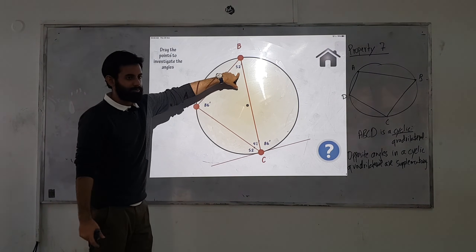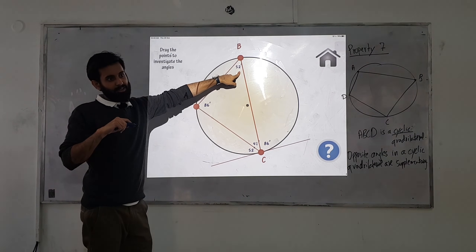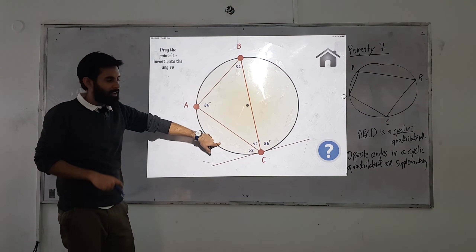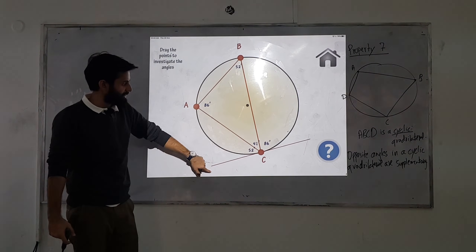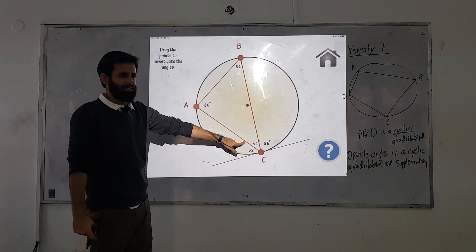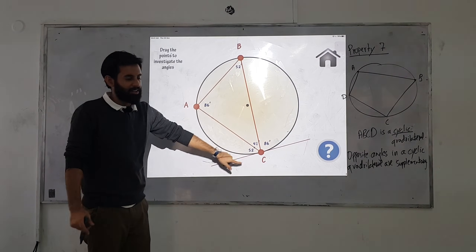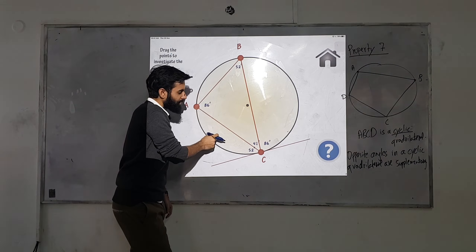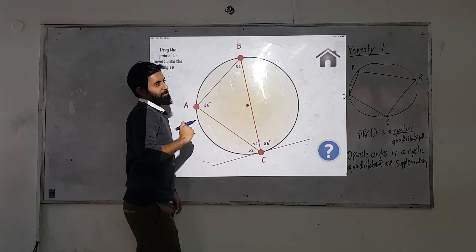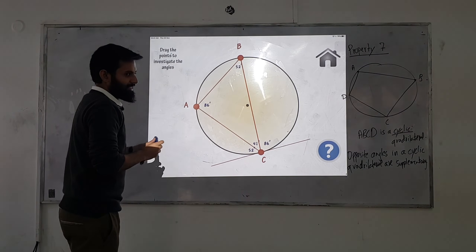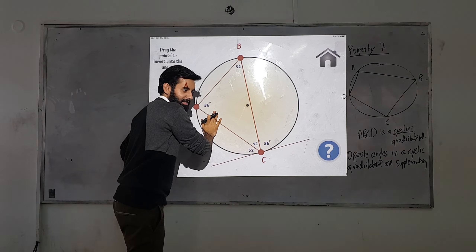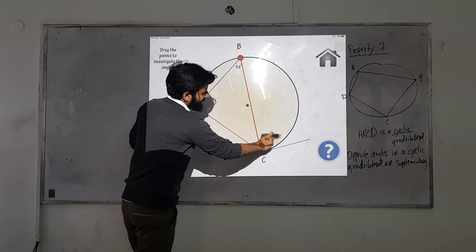Are we clear on what a segment and a tangent are? So here's 52 degrees — this 52 is the same as the angle that the tangent makes with the segment opposite to it. This 52 and the tangent's angle are both equal. The 52-degree angle subtends a segment, and the angle the tangent makes with the opposite segment equals 52.